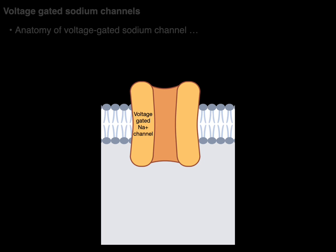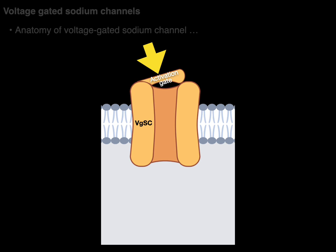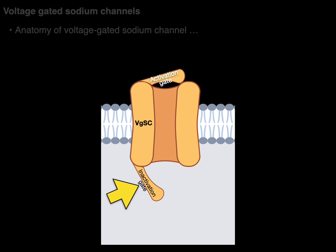The anatomy of these channels is as such. The voltage-gated sodium channel — abbreviated VGSC — has on the interstitial side an activation gate, which is closed when the channel is at rest but opens after the membrane depolarizes. On the cytoplasmic side there is an inactivation gate that is open at rest but closes after the membrane depolarizes, staying closed until the resting membrane potential is re-established.